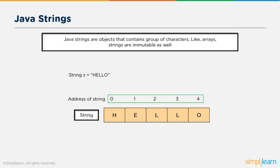Let's see what strings are and how we can use strings in Java. Java strings are objects that contain groups of characters. Like arrays, strings are immutable as well. Immutable means once a string is created, it cannot be changed or manipulated. If we use the string 'hello', it is stored in a memory location where 0, 1, 2, 3, 4 are the addresses of the locations where each character of the string is stored.